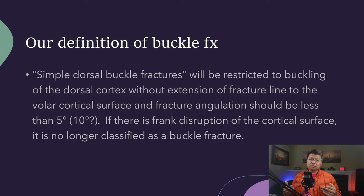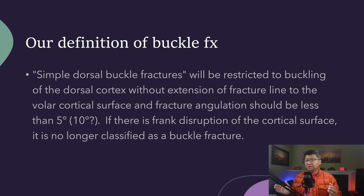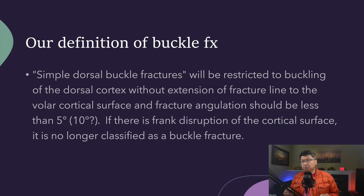So we came up with our definition of what a buccal fracture should be — you can use this as a guide to help you come up with your own. Simple dorsal buccal fractures will be restricted to buckling of the dorsal cortex without extension of the fracture line to the volar cortical surface, and fracture angulation should be less than five degrees. Literature says 10 degrees, but we wanted to be ultra-conservative and left it at five. If there is frank disruption of the cortical surface, it is no longer classified as a buccal fracture.